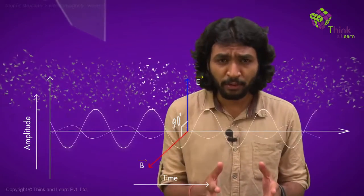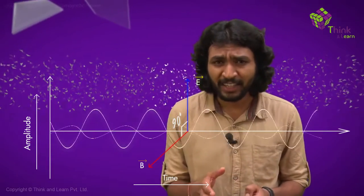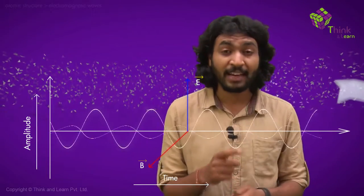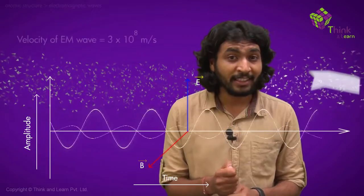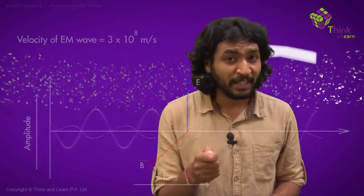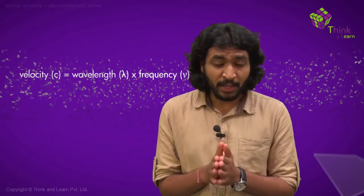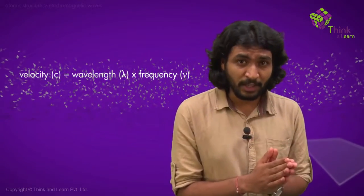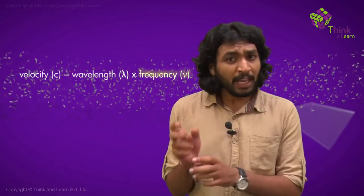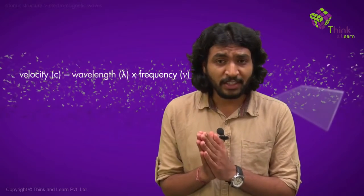Electromagnetic waves, unlike sound or ocean waves, can travel anywhere. They do not need a medium to travel; they can even travel in vacuum. They travel everywhere with the same velocity—that is 3 into 10 power 8 meters per second, which is equal to the speed of light. The velocity of every electromagnetic wave is a product of its wavelength and frequency.